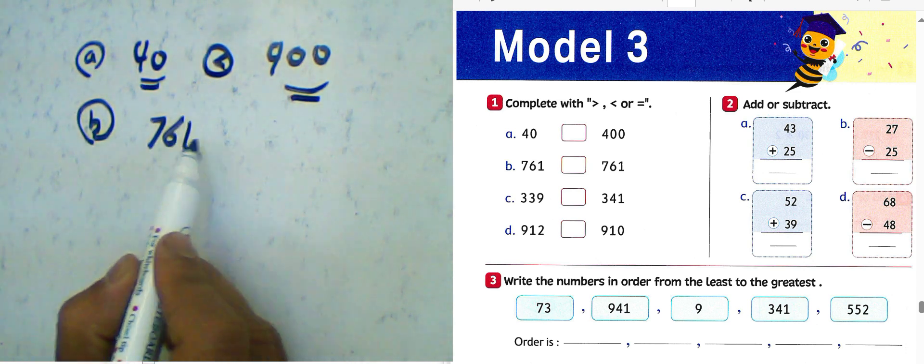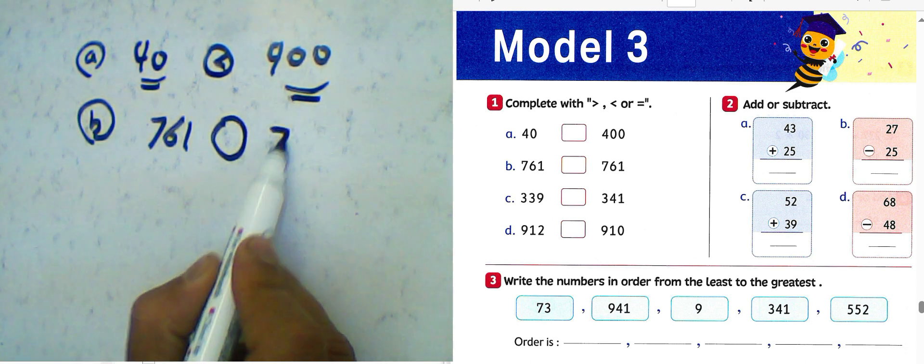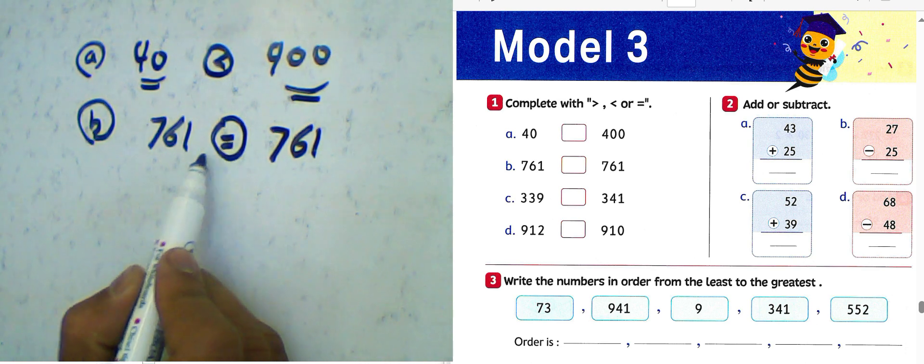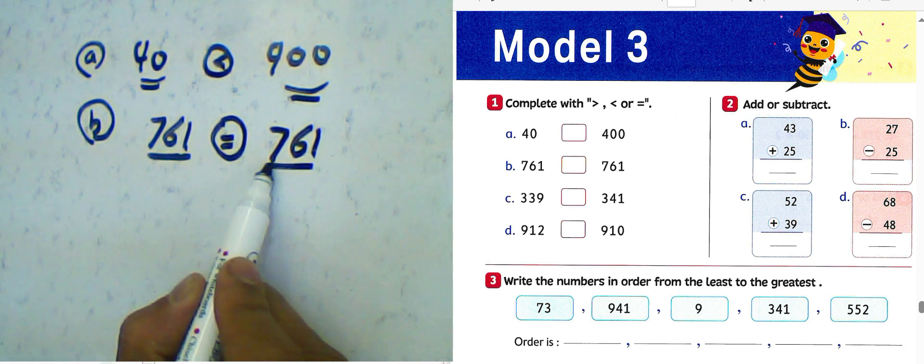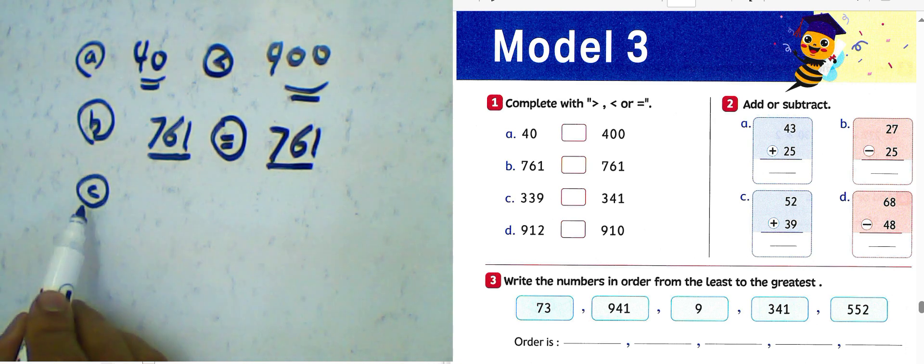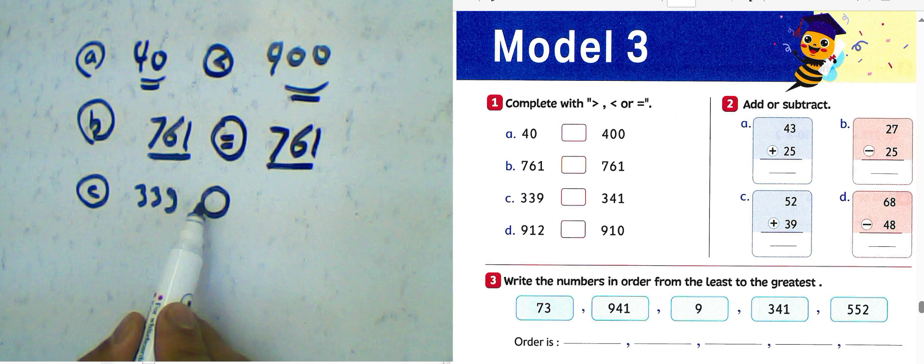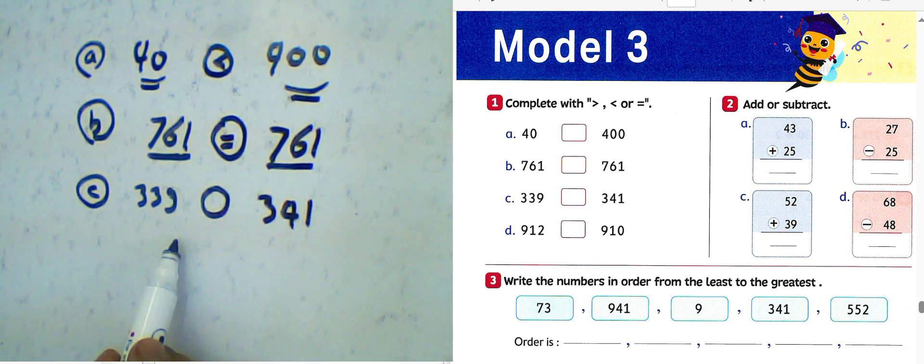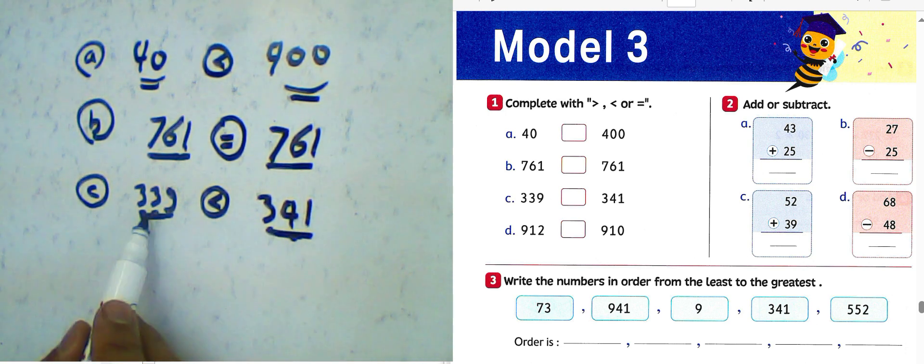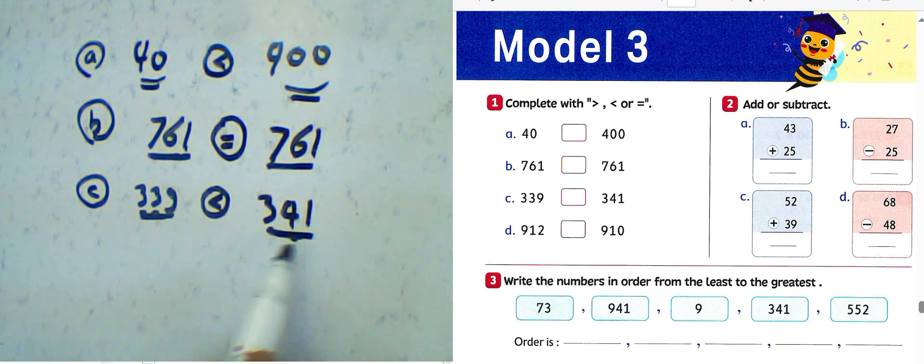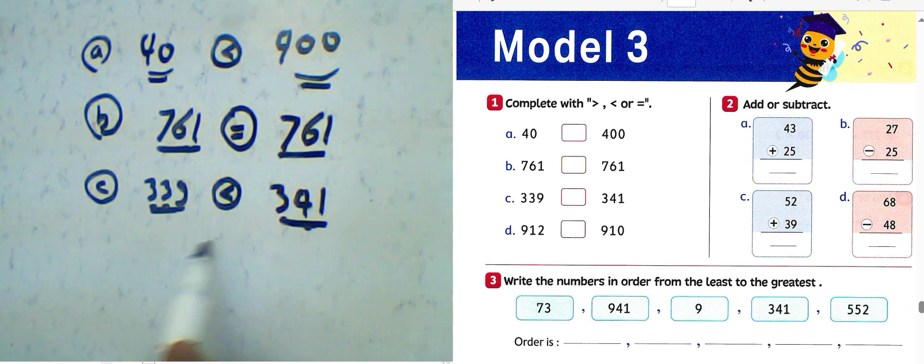Like numbers here, similar. Letter C: 339 and 341. We have 3, like 3, 3, this and 4. Then we must write less than. We have three digits here and three digits. This number leads in 341.